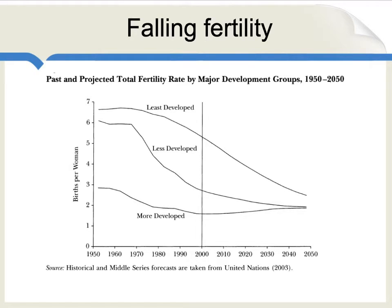We can see also that fertility rates are falling. This means that families or single women are having fewer children. This trend came first to the more developed nations, but it has spread also to the less developed nations and the least developed nations. In terms of projections out to 2040-2050, you can see there are predictions of an eventual partial convergence.